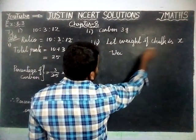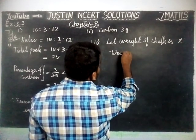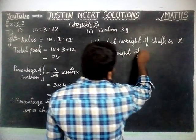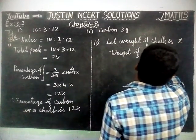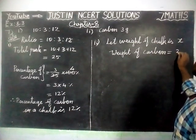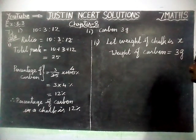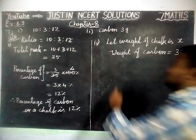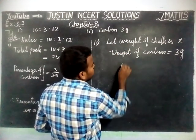Weight of the chalk — let weight of the chalk be x. Weight of carbon is equal to 3 grams. Now, how can we find this? Carbon percentage is equal to 12 percent.